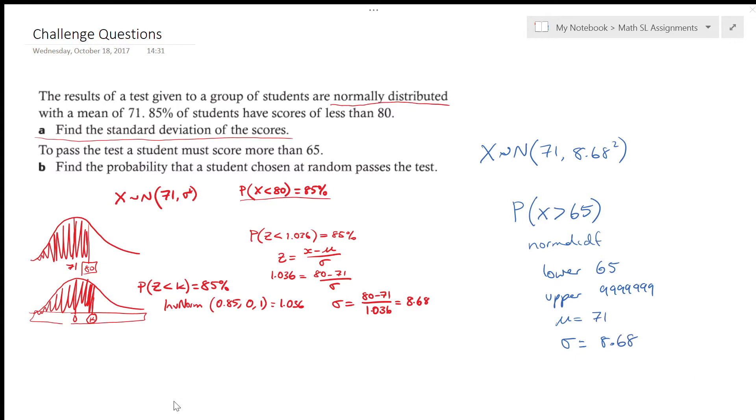So let's throw that in the calculator and see what we get. So normal CDF, we're going to go from 65 up to a nice big number, mean of 71 and a standard deviation of 8.68. Alright.